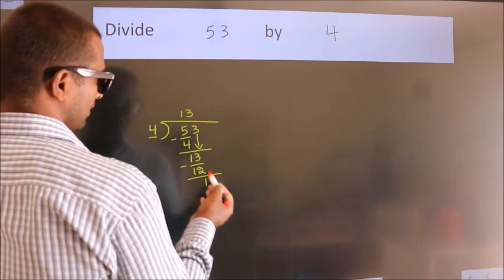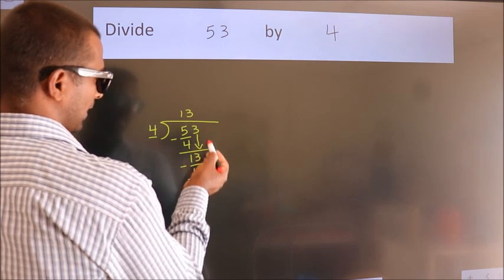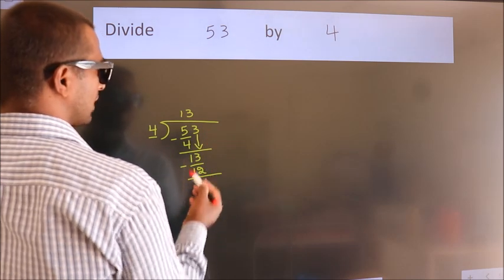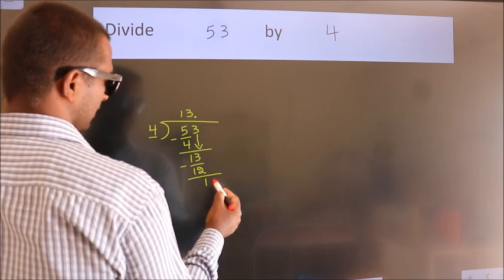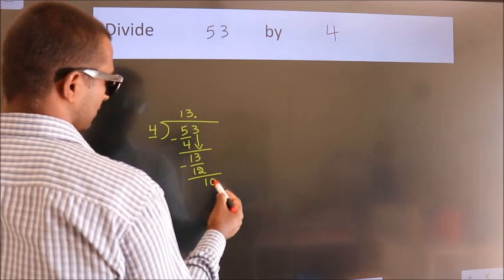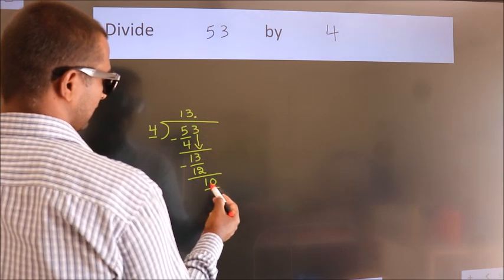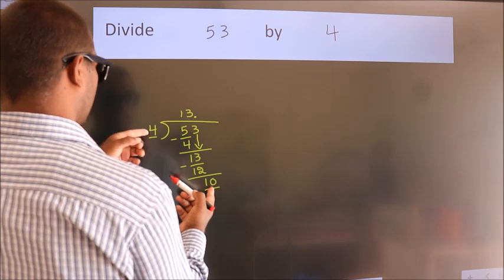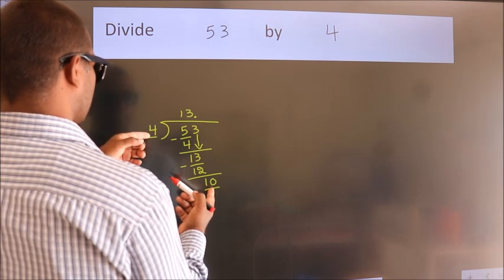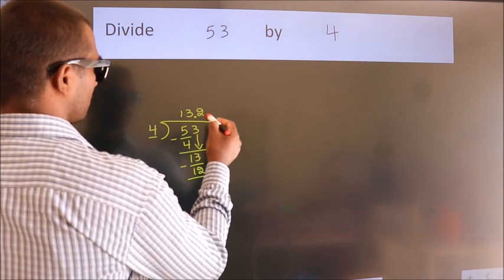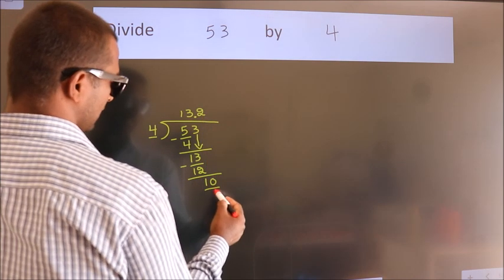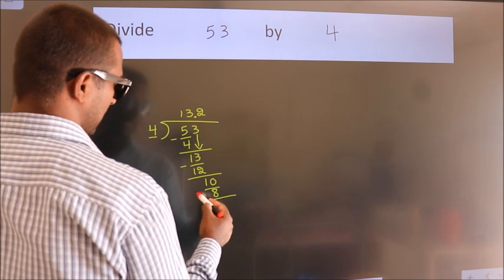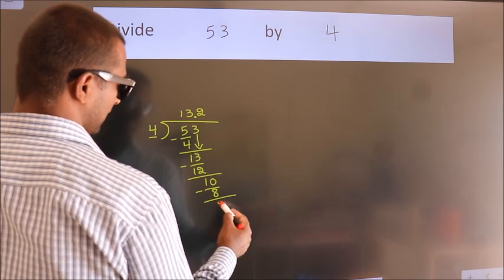After this, there are no more numbers to bring down. So what we do is, we put a dot and take 0 — so, 10. A number close to 10 in the 4 times table is 4 twos is 8. Now we subtract. We get 2.